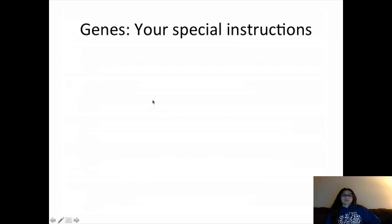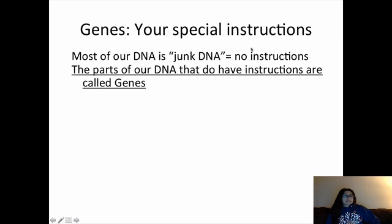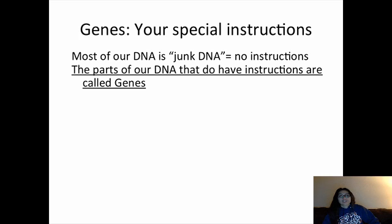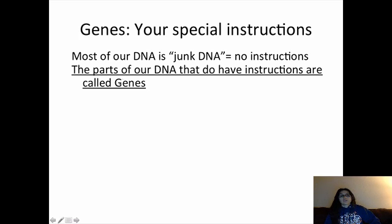Most of your DNA is actually junk DNA. In humans, we have three billion base pairs making up our DNA, and yet most of that is what we call junk DNA — it doesn't have any instructions at all. If you looked at all of human DNA, most of it has no instructions for making proteins. Scientists conveniently named it junk DNA. The parts that do have instructions are called genes.